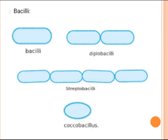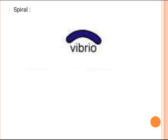We also have coccobacillus, which is very important because it is intermediate between coccus and bacillus. An example of coccobacillus is Salmonella.